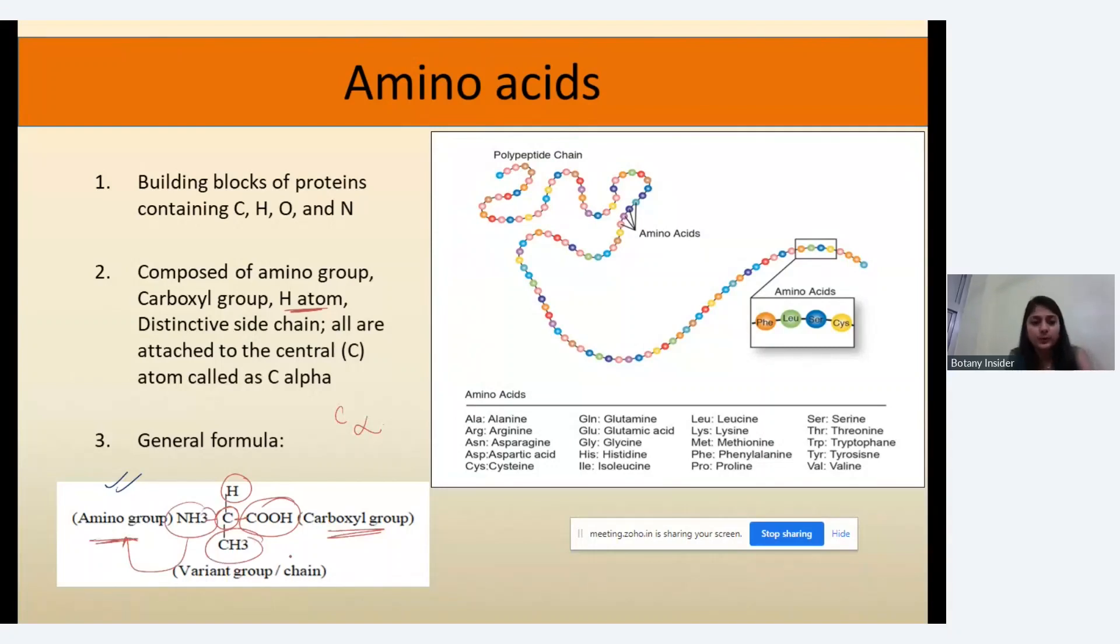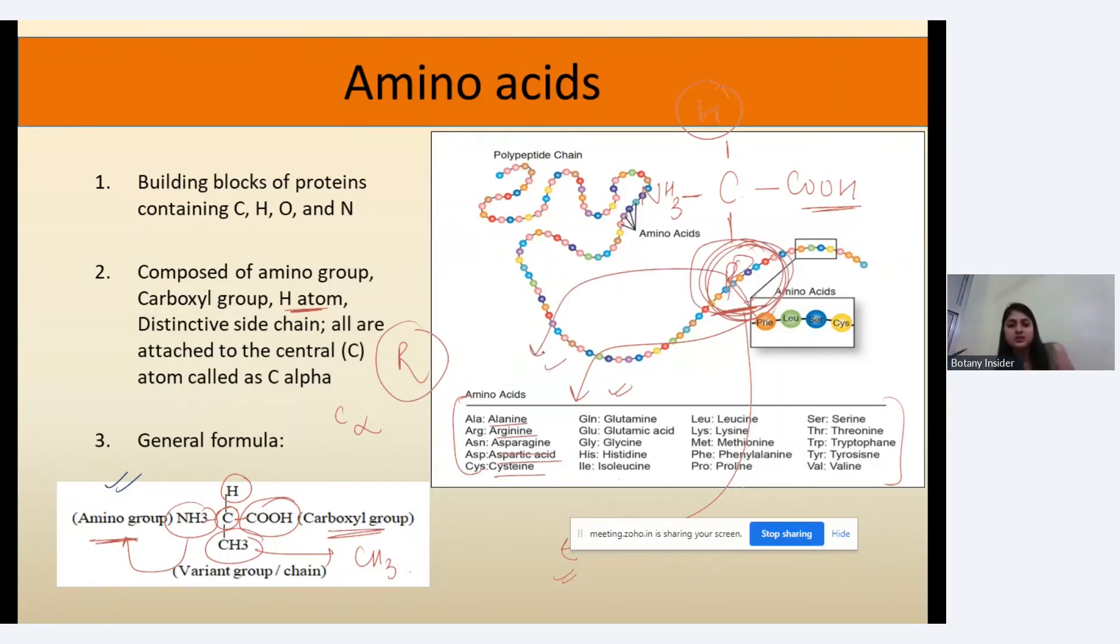On the top we have hydrogen and on the downside we have R. Depending on this R, the side group, which is the distinctive side chain, we have various types of amino acids like alanine, arginine, asparagine, aspartic acid, and so on and so forth. This R is the side group, and depending on its change, the amino acid structure changes and the amino acid will be known by different names.